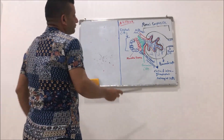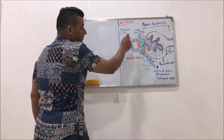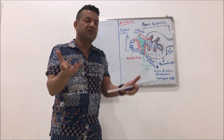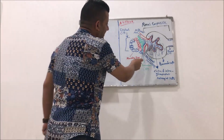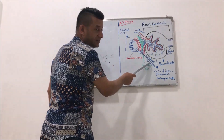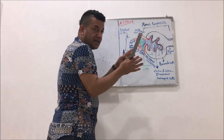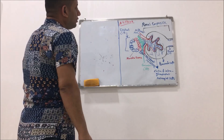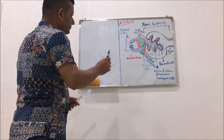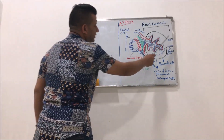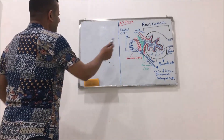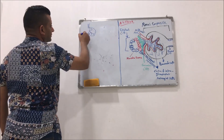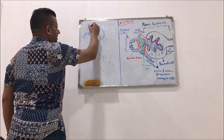The Bowman capsule is a funnel-shaped structure which receives the filtrate from the glomerulus. The afferent arteriole enters the Bowman capsule forming invaginations, or what is called a tuft, and the Bowman capsule has an efferent arteriole with a lesser diameter.